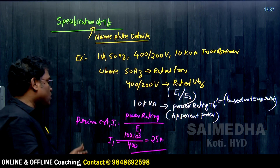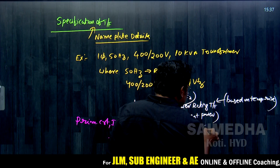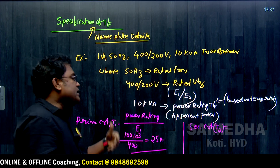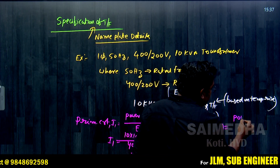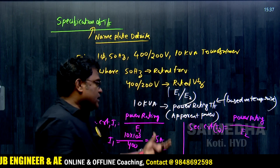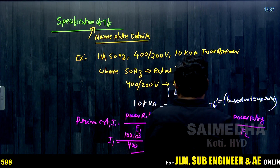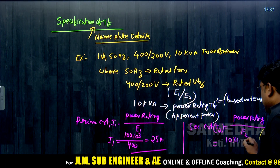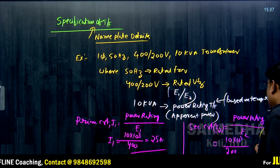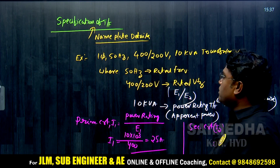Next, we find the secondary current. The secondary current I2 is equal to the power rating divided by the EMF induced in the secondary winding: 10 × 10³ divided by 200 volts, which equals 50 amps.